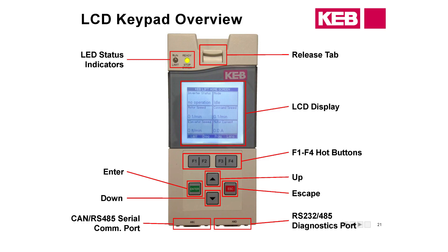The LCD display home screen lets you view multiple parameters at once, making diagnostics much easier. Instead of manually going to one parameter at a time, everything is on the home screen: inverter status on the upper left, drive mode on the upper right, motor speed and command speed in the middle in RPM values, and elevator speed on the lower left with motor current on the lower right.